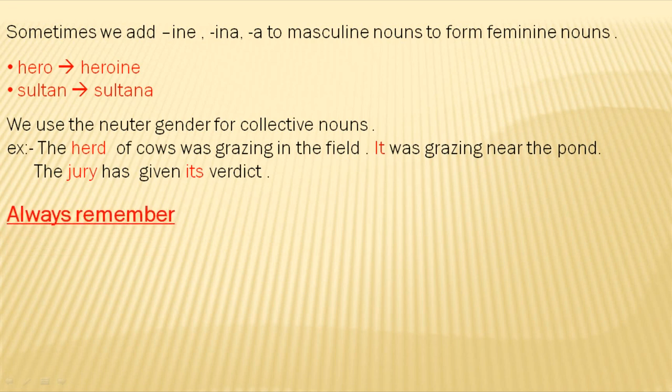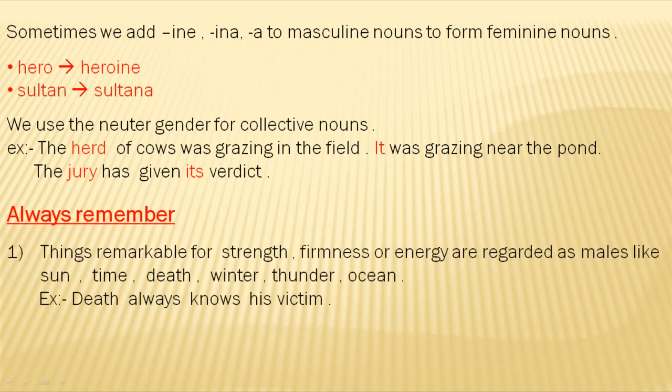We should always remember: things remarkable for strength, firmness, or energy are regarded as males, like sun, time, death, winter, thunder, ocean. For example: 'Death always knows his victim.' Here, death is personified and we have used 'his' for death, which is masculine gender.